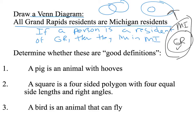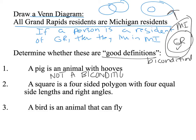The last part: determine whether these are good definitions. Good definitions can be written as a biconditional — they're specific and not too vague. The first one: a pig is an animal with hooves. The conditional is 'if the animal is a pig, then it has hooves,' and the converse is 'if it has hooves, then it is a pig.' This is not a good definition because you can't write it as a biconditional — cows also have hooves.